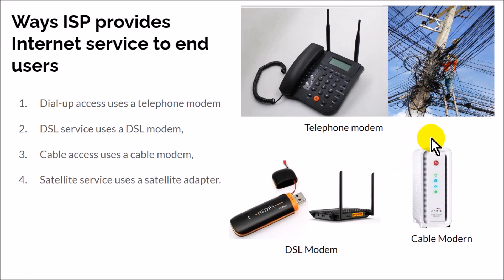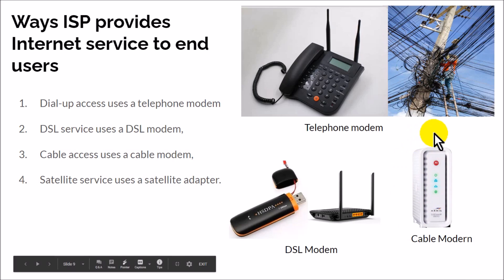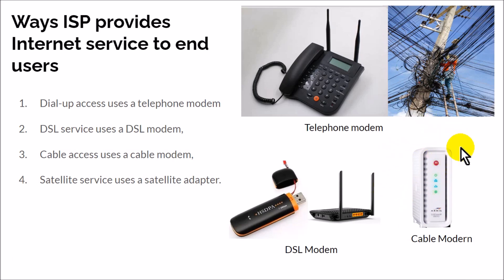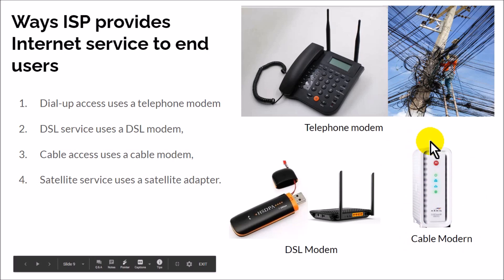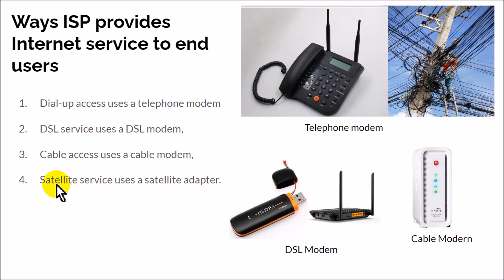Another way internet is transmitted is via the cable modem. Just like your DSTV transmits signal to your home, you can use similar cable connections to transmit internet to your house and offices. If you are using this technology, your service provider transmits internet through cable connections and you use a cable modem to receive the signal, then distribute internet within your home or office.